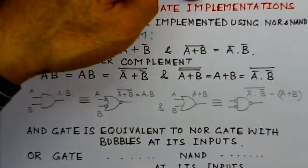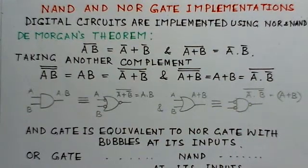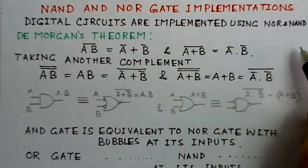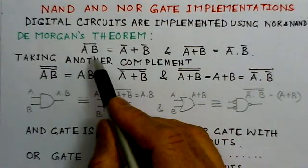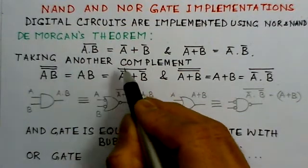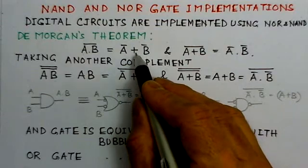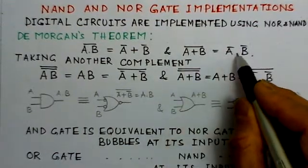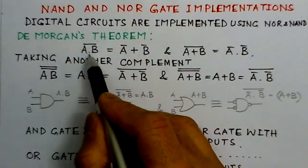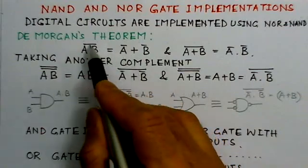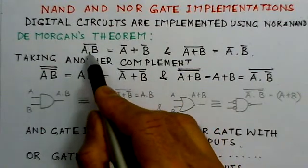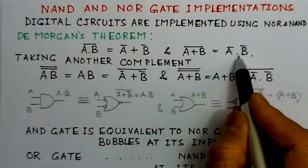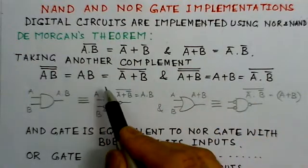One very important thing is NAND and NOR implementations — how digital circuits can be implemented using NOR and NAND. Looking at De Morgan's theorem: (A·B) complement equals A-bar OR B-bar, and (A OR B) complement equals A-bar·B-bar. To apply it: break the bar and replace the dot with a plus sign, or replace the plus sign with a dot. These are the two variations of De Morgan's theorem.